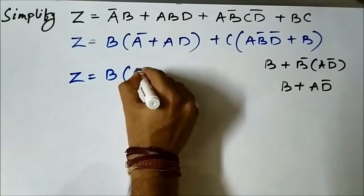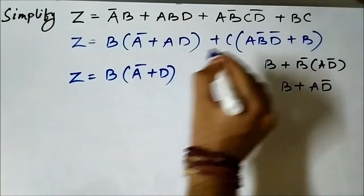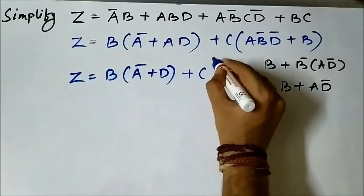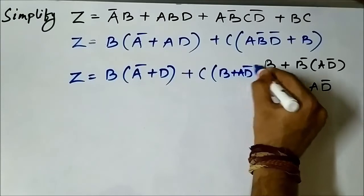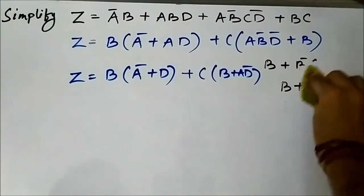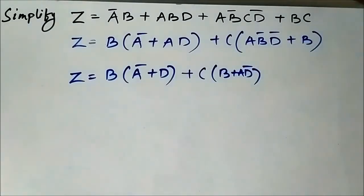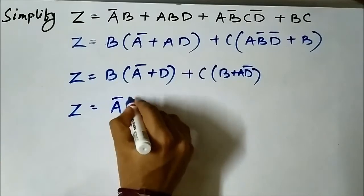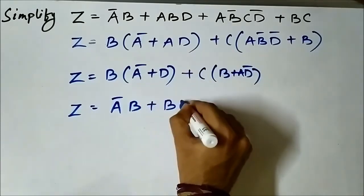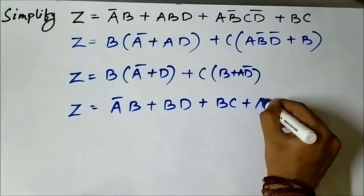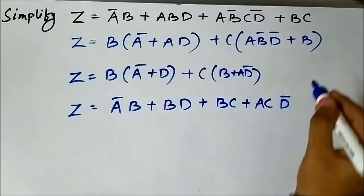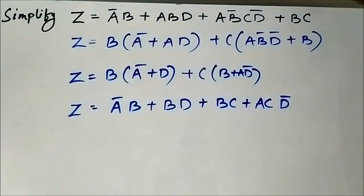After applying the rules, the expression becomes: z = ā·b + b·d + b·c + a·d̄. Let us now see if this can be simplified further.